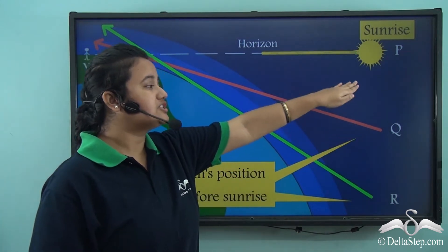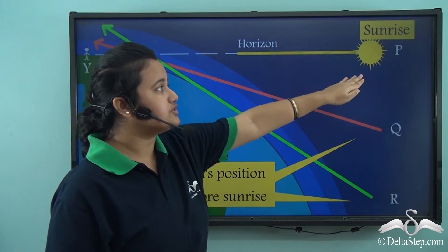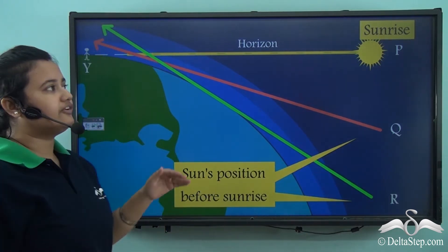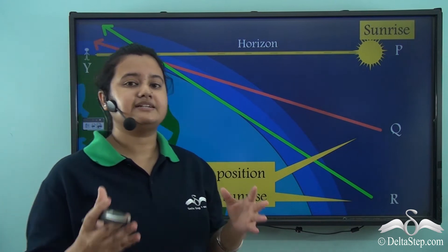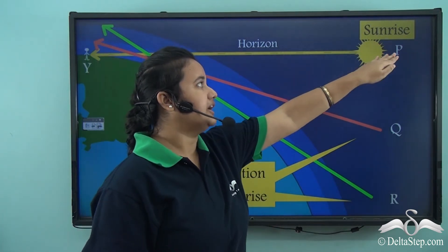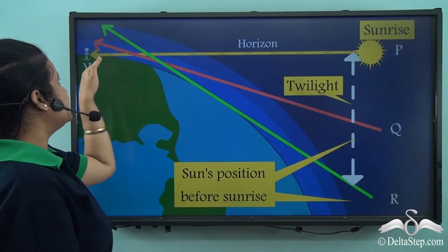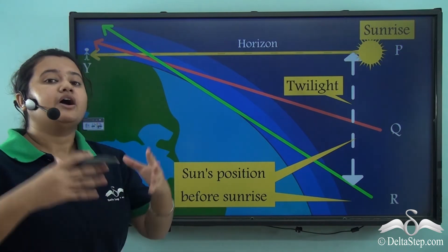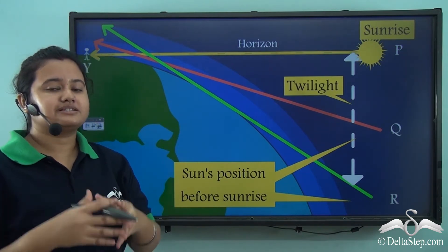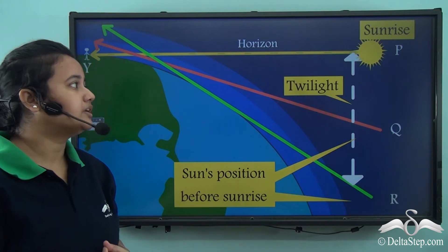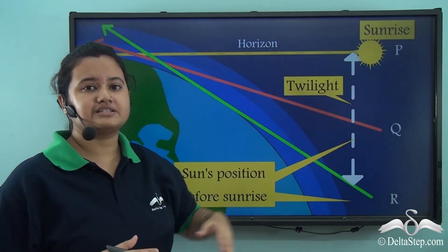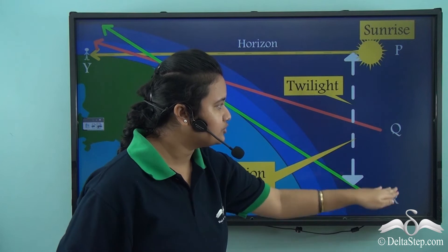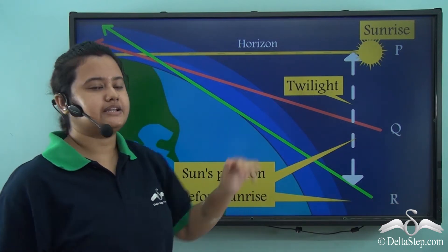Now as the sun shifts to position P, the observer will be able to see a rising sun — that is, it is the time of sunrise. Here, the sun rays strike the earth's surface directly and illuminate the sky with bright light. So this phase of partial light from P to R is known as twilight.